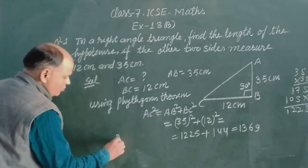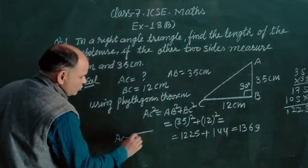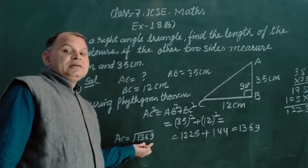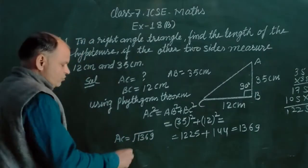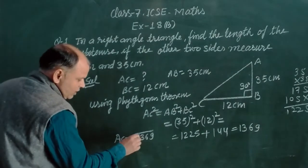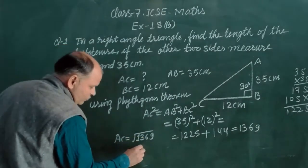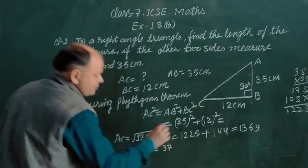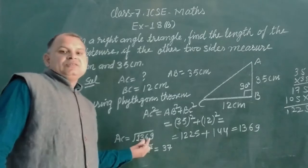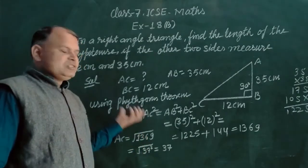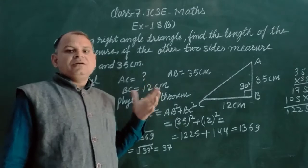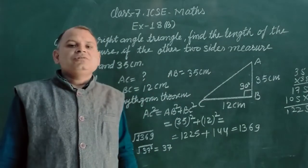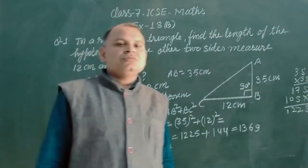So AC is how much? 1369. Then this is the square root, square root of 1369 is 37, so we find 37. You can find the square root of this number by division method, and for this you can watch my previous video which is based on square root.